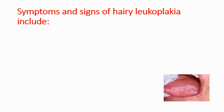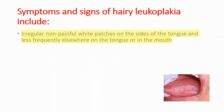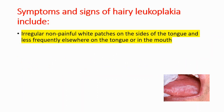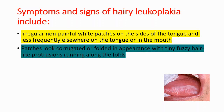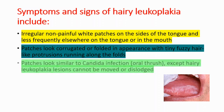Symptoms and signs of hairy leukoplakia include irregular, non-painful white patches on the sides of the tongue, and less frequently elsewhere on the tongue or in the mouth. Patches look corrugated or folded in appearance, with tiny fuzzy hair-like protrusions running along the folds. The patches look similar to candida infection (oral thrush), except hairy leukoplakia lesions cannot be moved or dislodged.